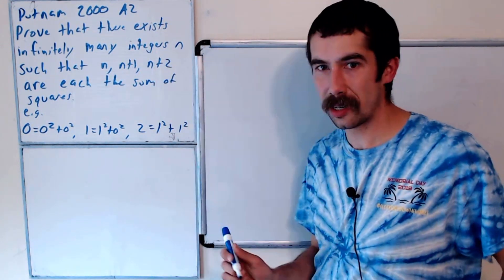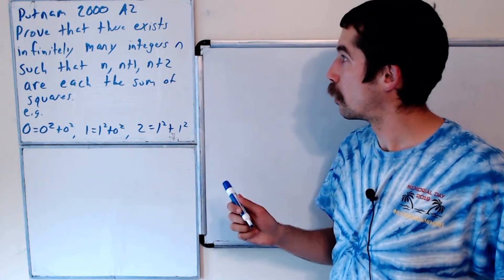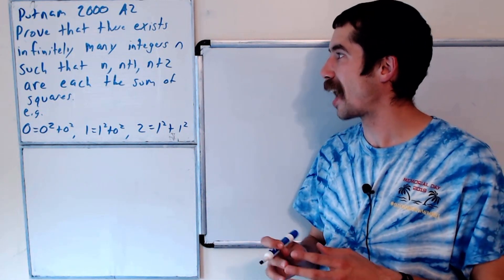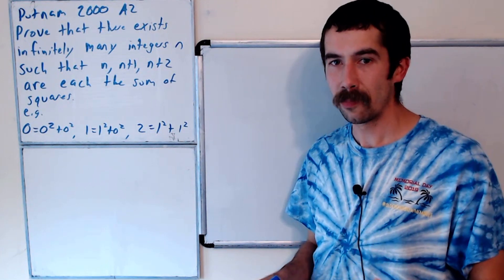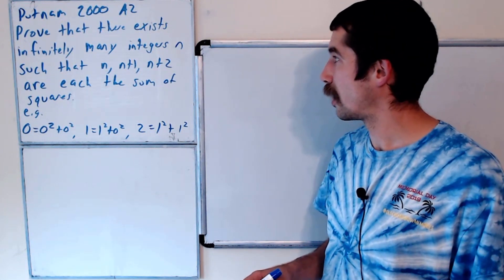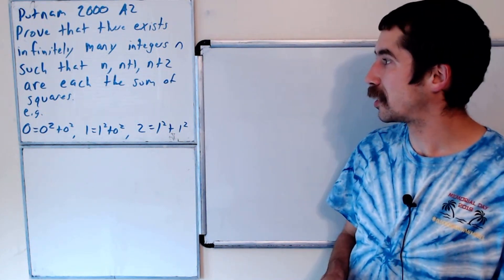Putnam 2000 A2. Prove that there exists infinitely many integers n, such that n, n plus 1, and n plus 2 are each the sum of squares.